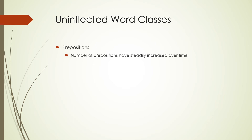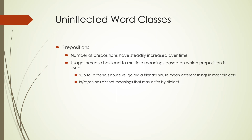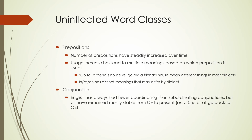For other word classes, we have prepositions — the biggest change is that we keep getting more and more of them, increasing over time. Increased usage has also led to multiple meanings. 'Go to a friend's house' versus 'go by a friend's house' means different things. There are distinct meanings that differ by dialect: 'in,' 'at,' and 'on' have different distribution in American English versus British English. Conjunctions are mostly not changing — 'and,' 'but,' and 'or' all go back to Old English and are still used in relatively the same way.